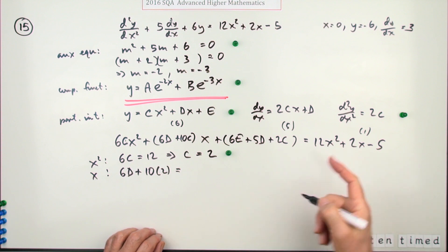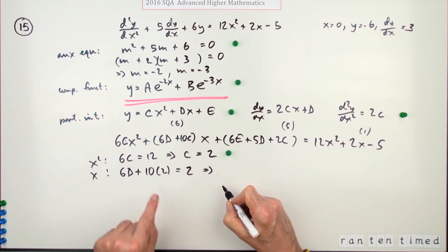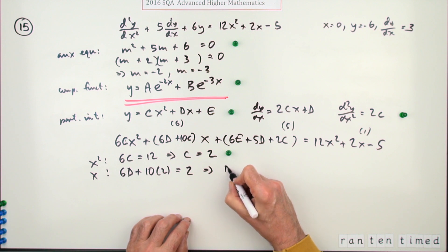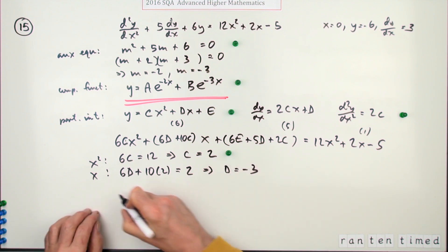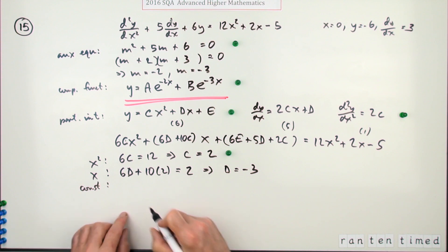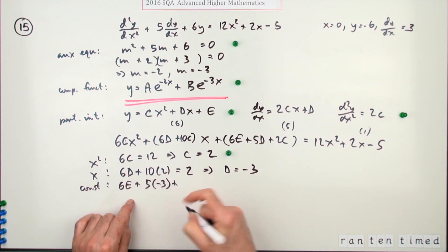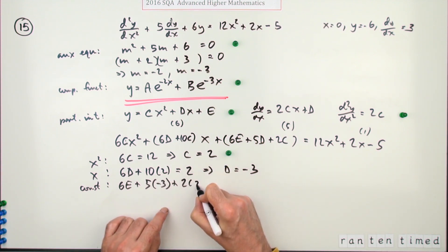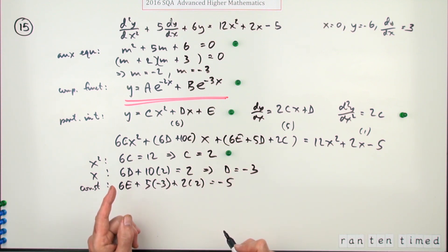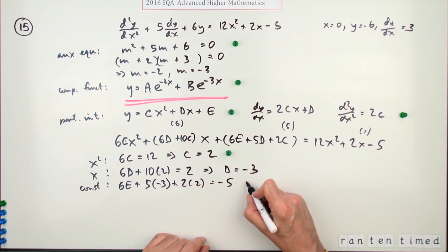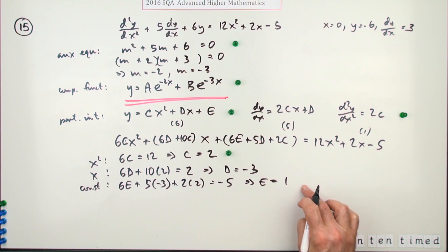The x terms, so 6d plus 10c. I've got c already, plus 10 times 2, should equal 2. So that's 20, whereas negative 18 divided by 6 means d is negative 3. The constant term, well, I've got 6e plus 5d, so d was negative 3, plus 2c, well c was 2, and that should come to negative 5. Negative 15, negative 11 plus 11 makes 6 divided by 6, means e is 1.